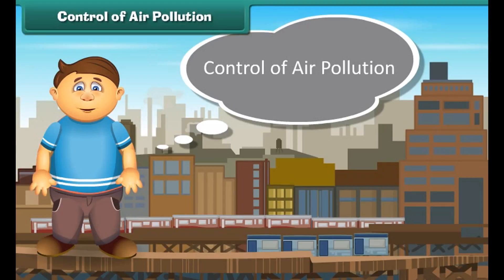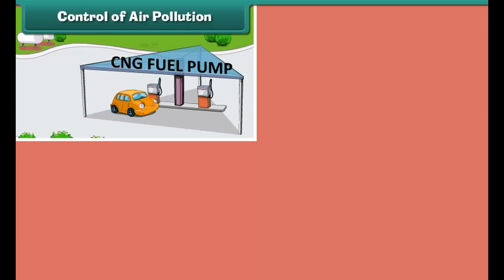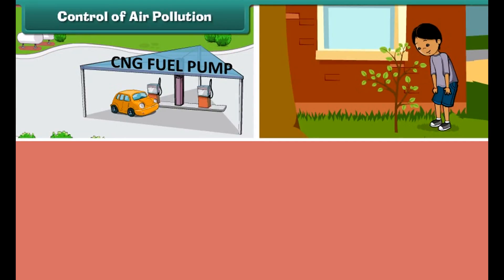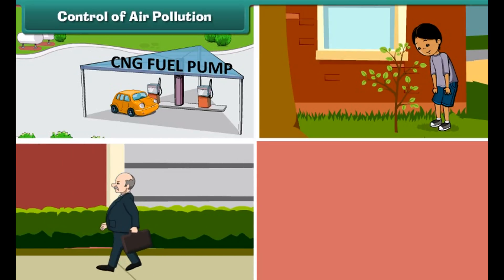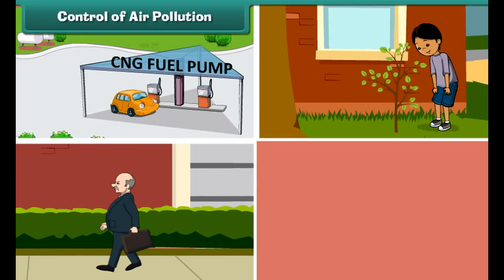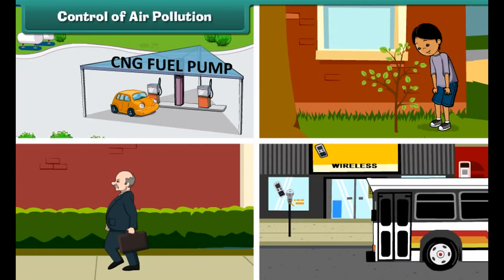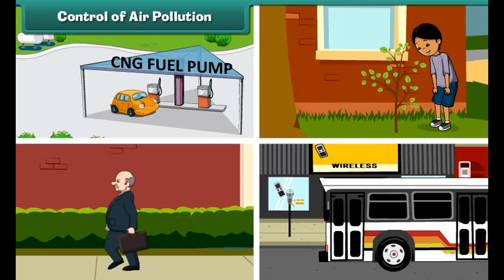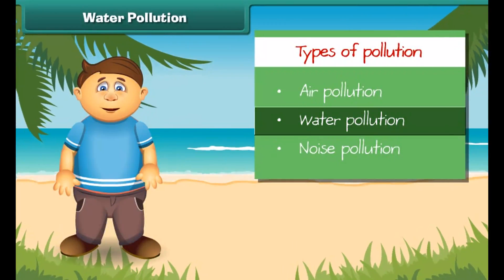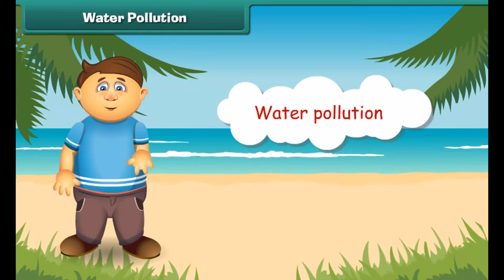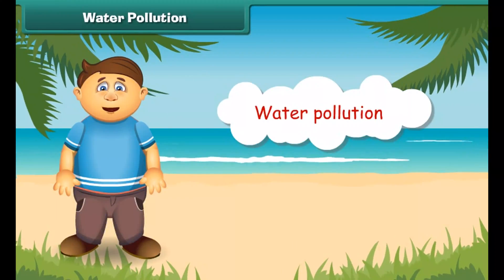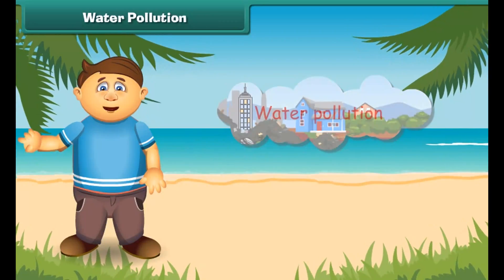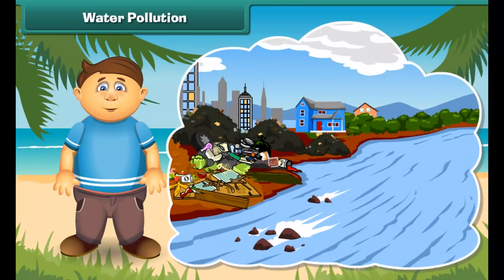There are many things that we can do to control air pollution. It can be controlled by using clean fuels like CNG in vehicles and industries, planting new young plants, preferring walking over driving, and using public transport for transportation. Now let's know about water pollution.